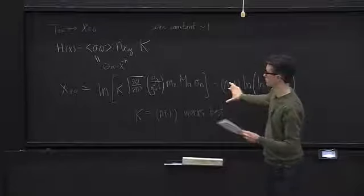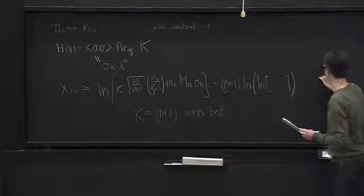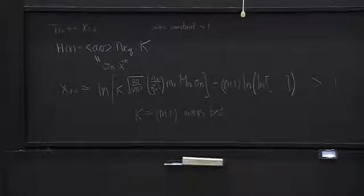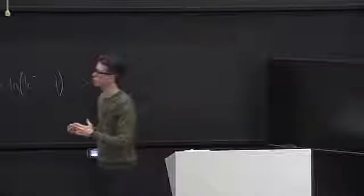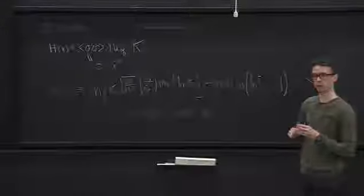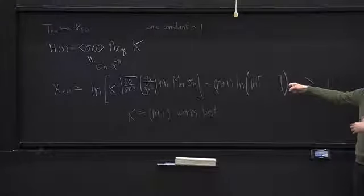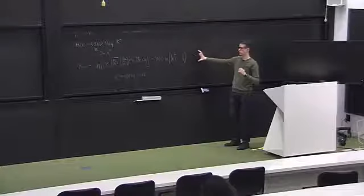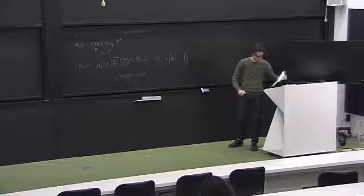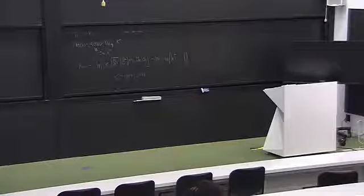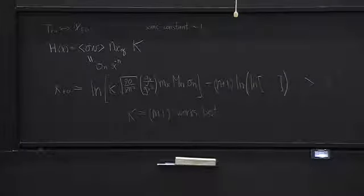One self-consistency check: x_f must be larger than one. Our implicit assumption is that freeze-out happens after the dark matter species becomes non-relativistic, so the freeze-out temperature should be smaller than the mass, corresponding to x_f greater than one. If this quantity is not larger than one, the assumptions are no good and you shouldn't apply this approximation. The second step is to take our freeze-out temperature, plug it back into the modified master equation, and figure out what the number density is at very large x.